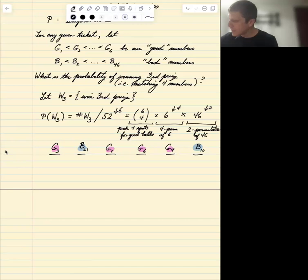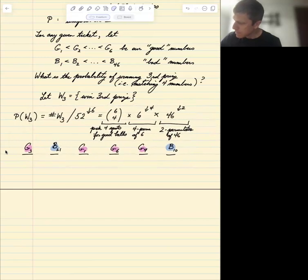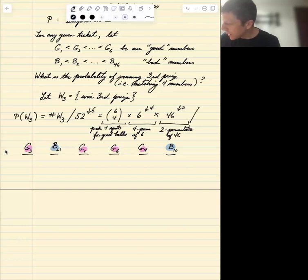And then we divide. Then we have to divide by all of the possibilities, which was 52 falling factorial six, and that's it.